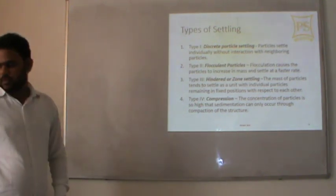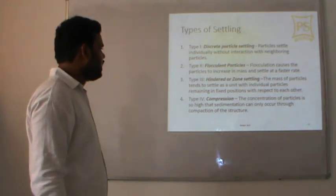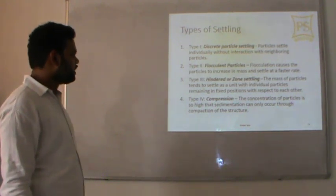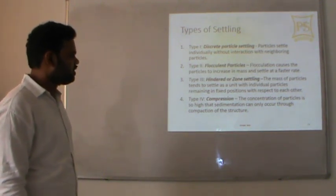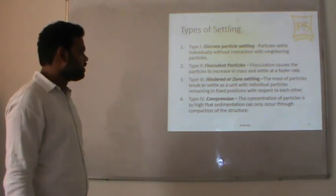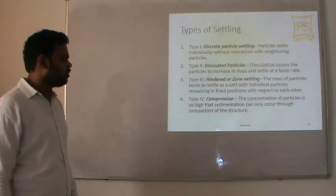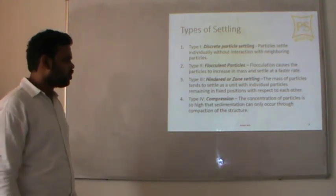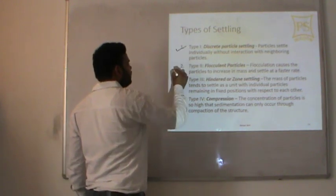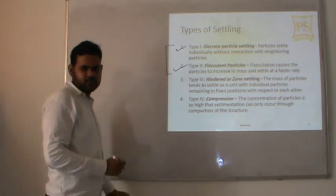Type 3 is hindered or zone settling, where the mass of particles tends to settle as a unit with individual particles remaining in a fixed position relative to each other. Type 4 is compression settling, where the concentration of particles is so high that sedimentation can only occur through compaction of their structure. Types 1 and 2 are in our syllabus at SPSU, so we will go into detail for these two only.